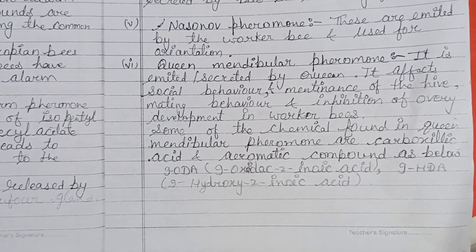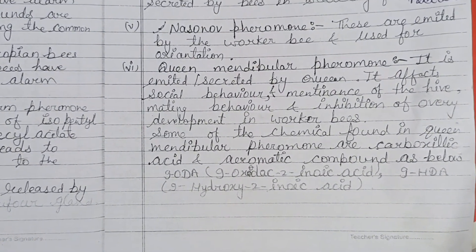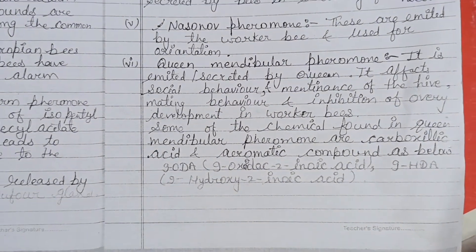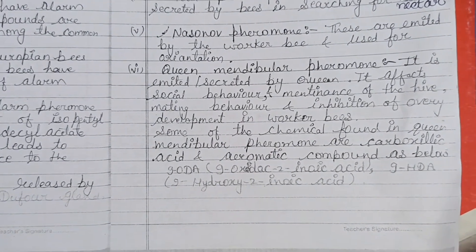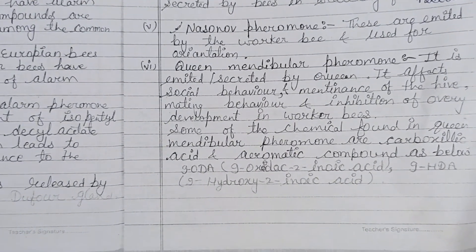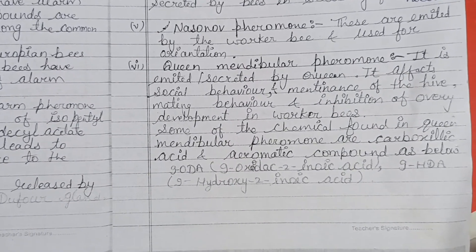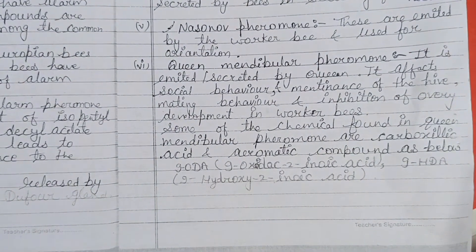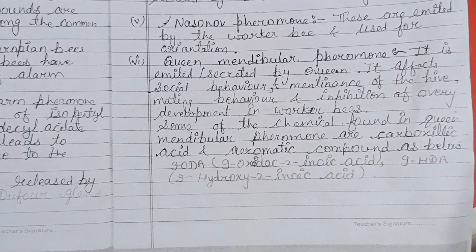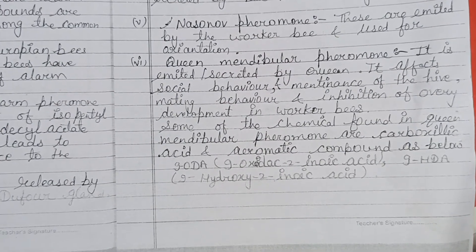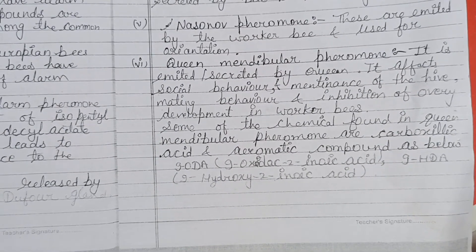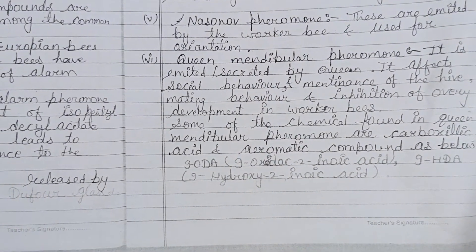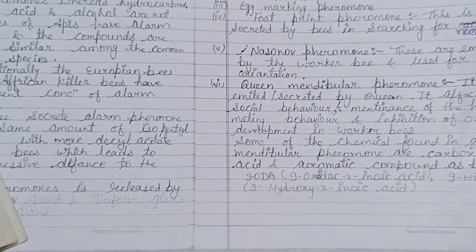The queen mandibular pheromone, also known as QMP, is secreted by the queen. It affects social behavior and maintenance of the hive, mating behavior, and inhibition of ovary development in worker bees. Worker bees are essentially sterile, which relates to ovarian inhibition by QMP. Chemicals found in QMP include carboxylic acid, aromatic compounds, 9-ODA (9-oxodec-2-enoic acid), and 9-HDA (9-hydroxy-2-enoic acid).